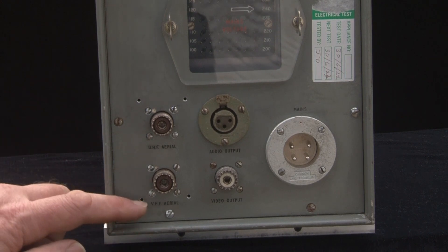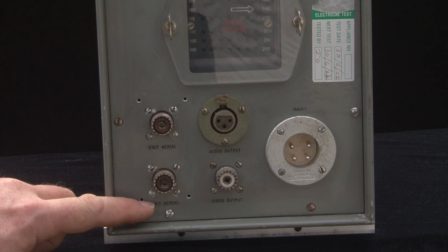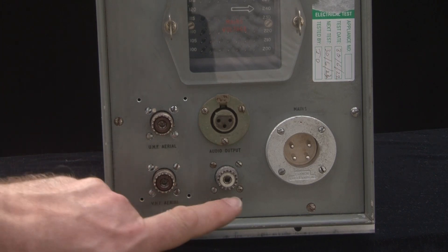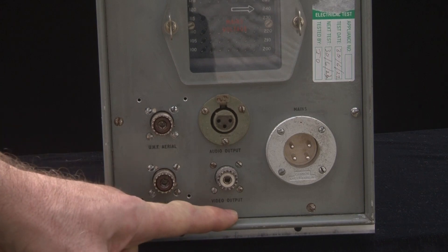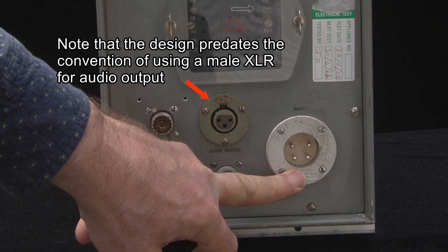Around the back there's not a lot to point out, other than the fact that we've got two aerial inputs. One for band 1 and 3, and the other one for band 5. And we've got our video output there. Balanced audio output, and 240 volt mains going in here.